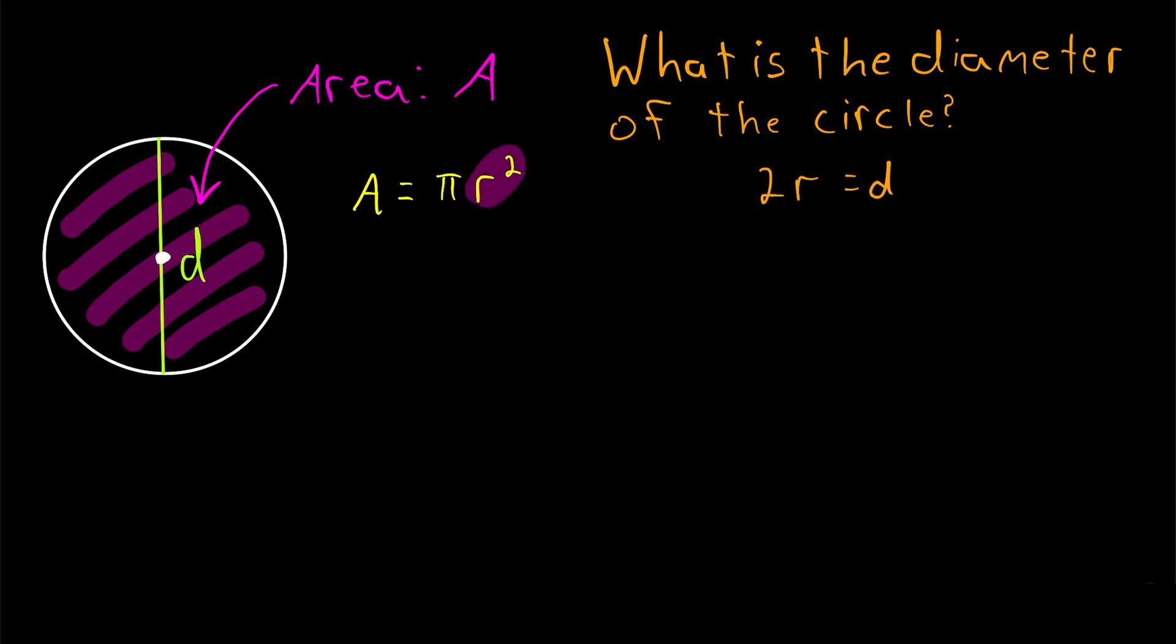We see currently that the radius is being squared, but before we take any square roots, let's get that factor of pi over to the other side of the equation. So divide both sides by pi. We have that the area of the circle divided by pi is equal to the radius squared.